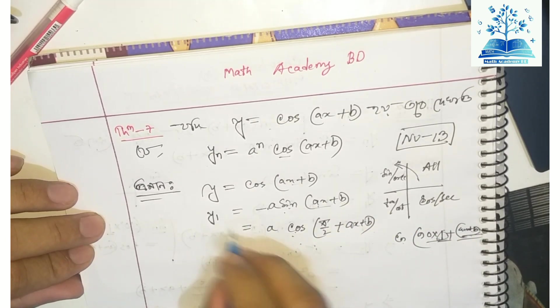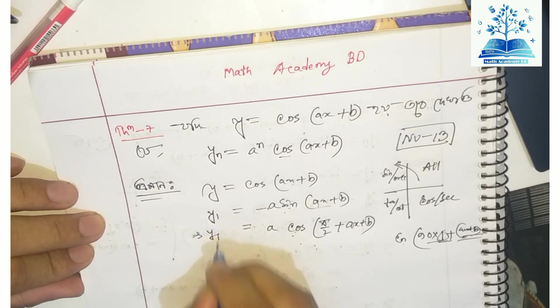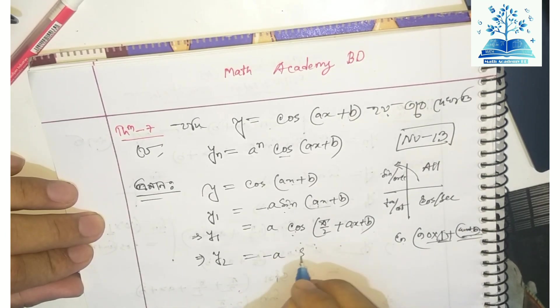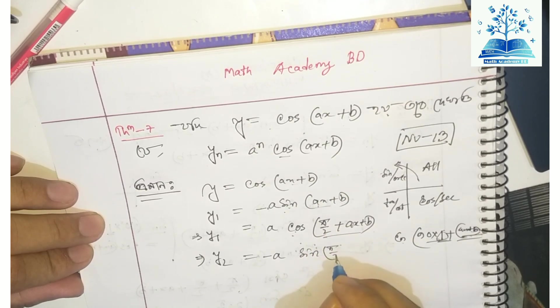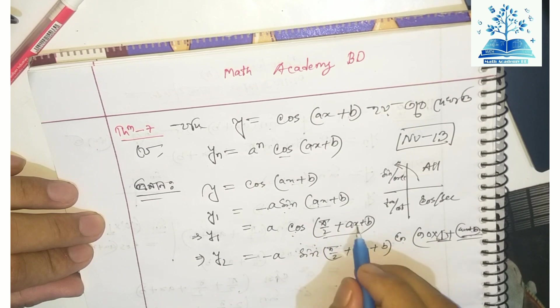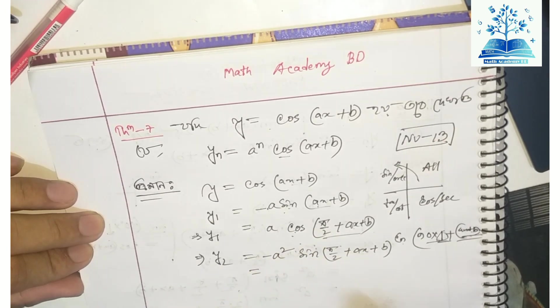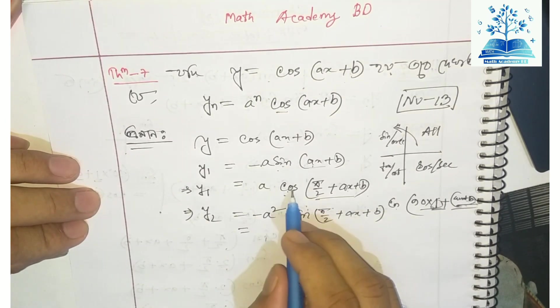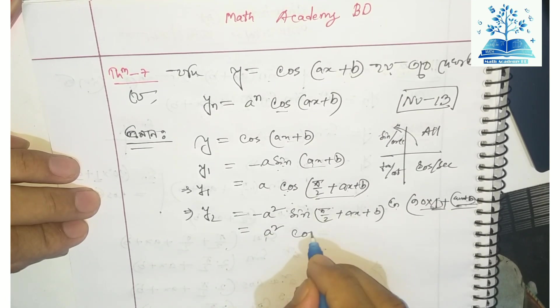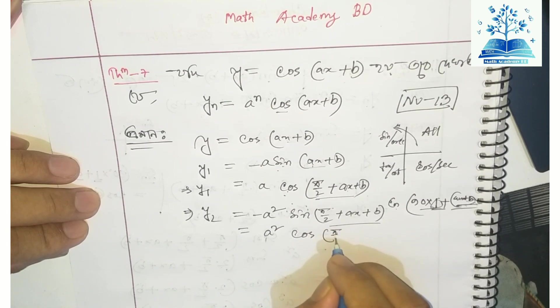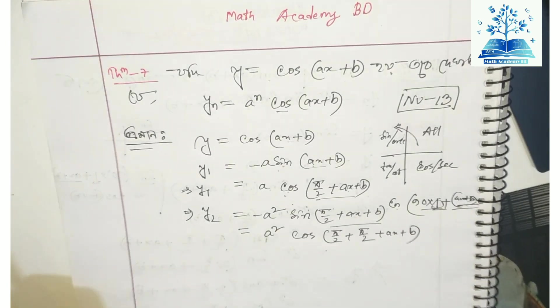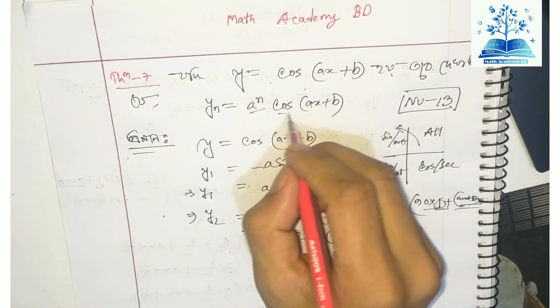For y₂, we differentiate again. The derivative of -sin(x) is -cos(x). So y₂ = a² cos(π + x + b). We can write it as a² sin(π/2 + x + b).